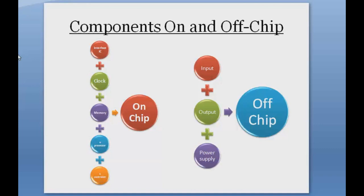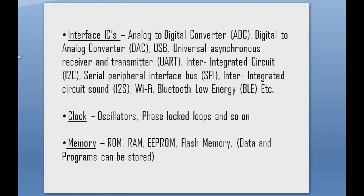The next topic is components on and off chip — pay close attention because it is important to understand what goes on the chip and what doesn't. Things that do NOT go on the chip are input/output and power supply. Things that DO go on the chip are interface ICs, clock, and memory. Note that memory can be internal or external, but by default it is internal, so it is listed as on-chip. For exam purposes, you can write that memory can be on-chip or off-chip. Also on-chip are the microprocessor and microcontroller.